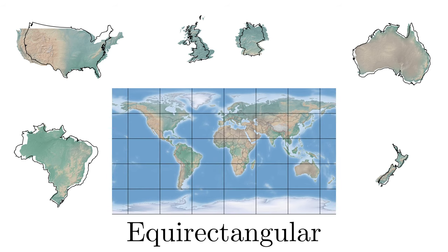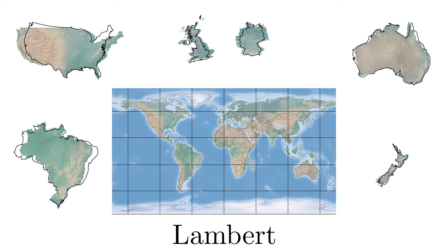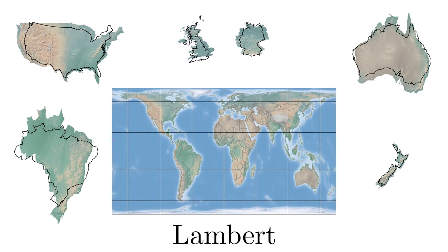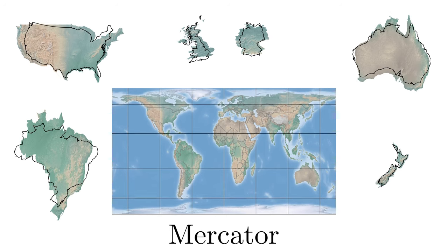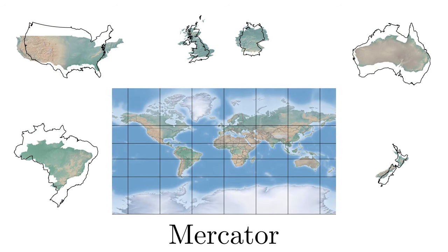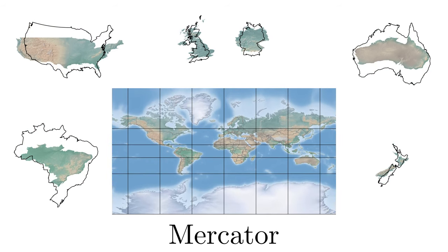We can improve this by stretching the projection, giving true land sizes, but still distorting shapes. Mercator distorts everything, and is unfortunately the projection used for Google Maps.